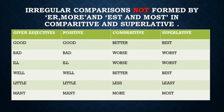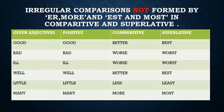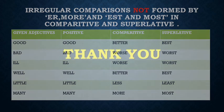Irregular comparisons are not formed by -er or -est. Let us see how they change: good — better — best; bad — worse — worst; ill — worse — worst; well — better — best; little — less — least; many — more — most. These are called irregular comparisons because they are not formed by the regular -er or -est pattern. I hope you have understood, students. Thank you.